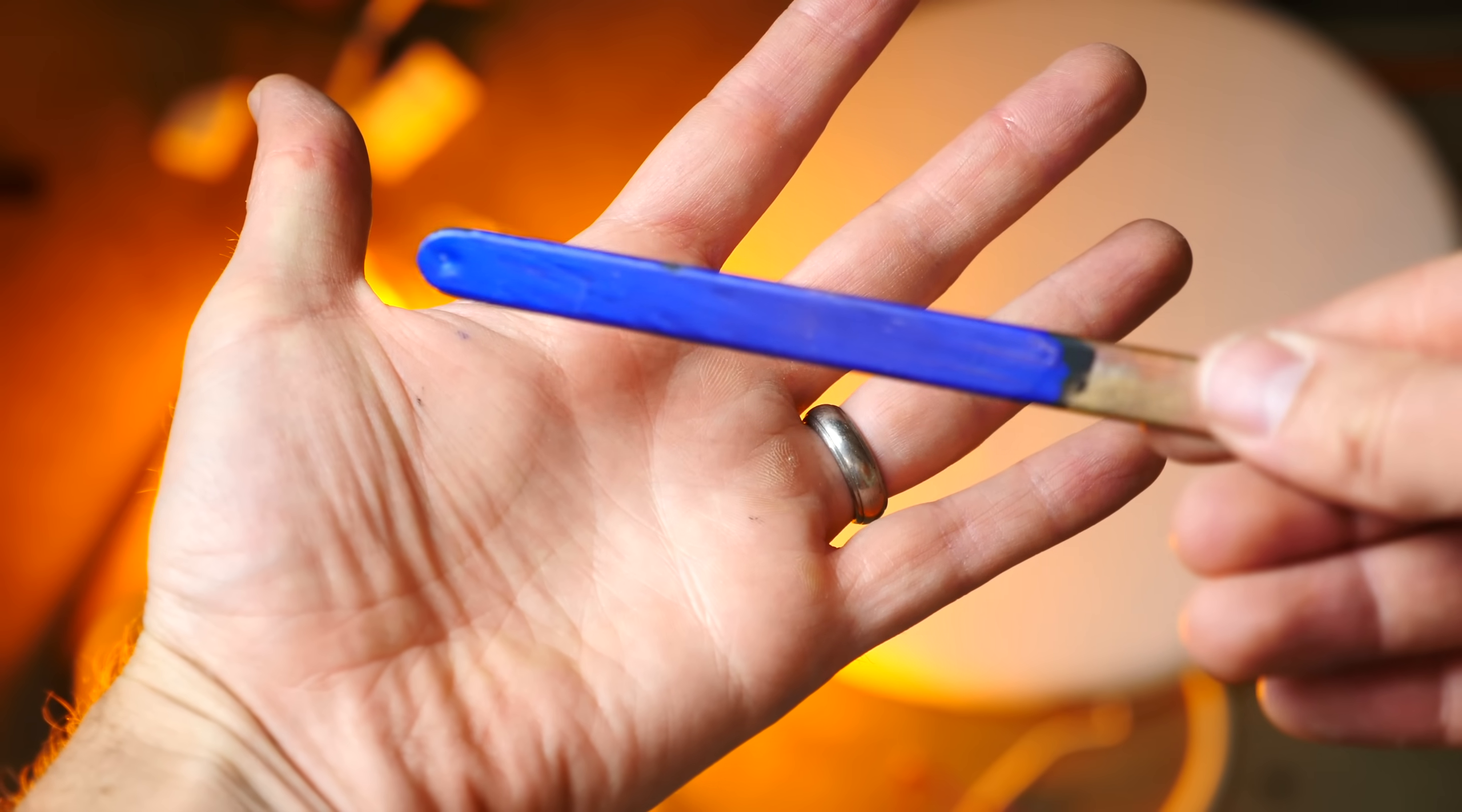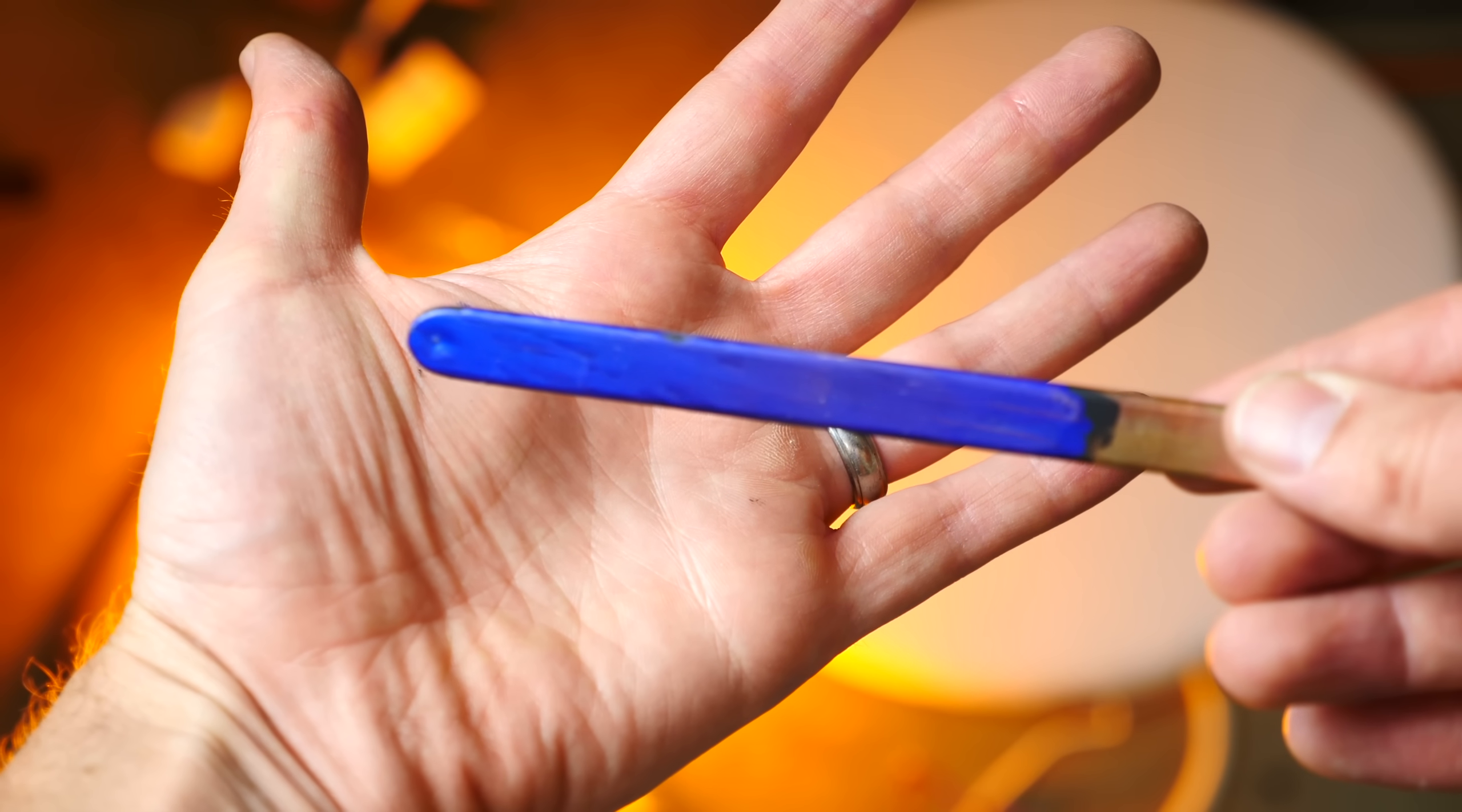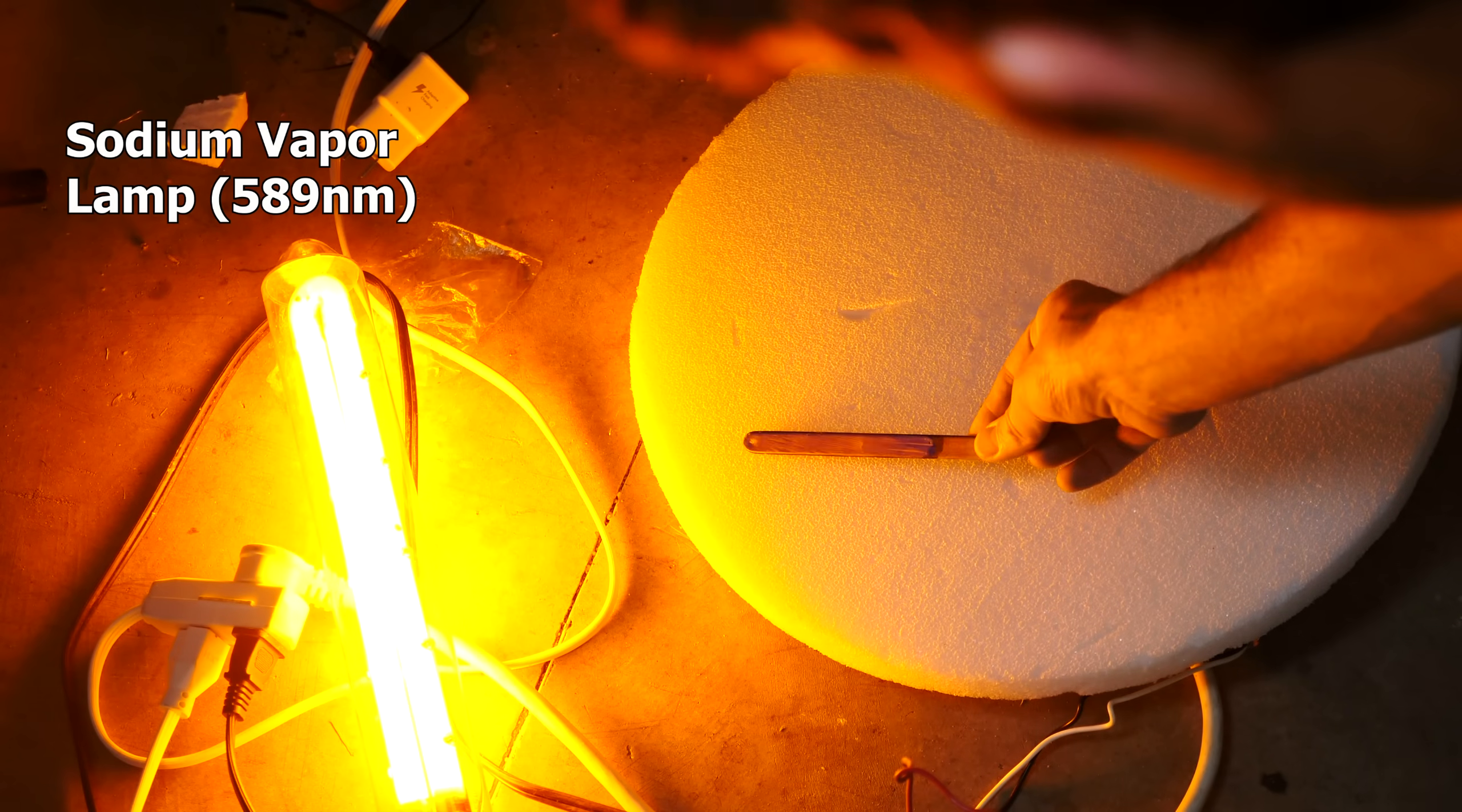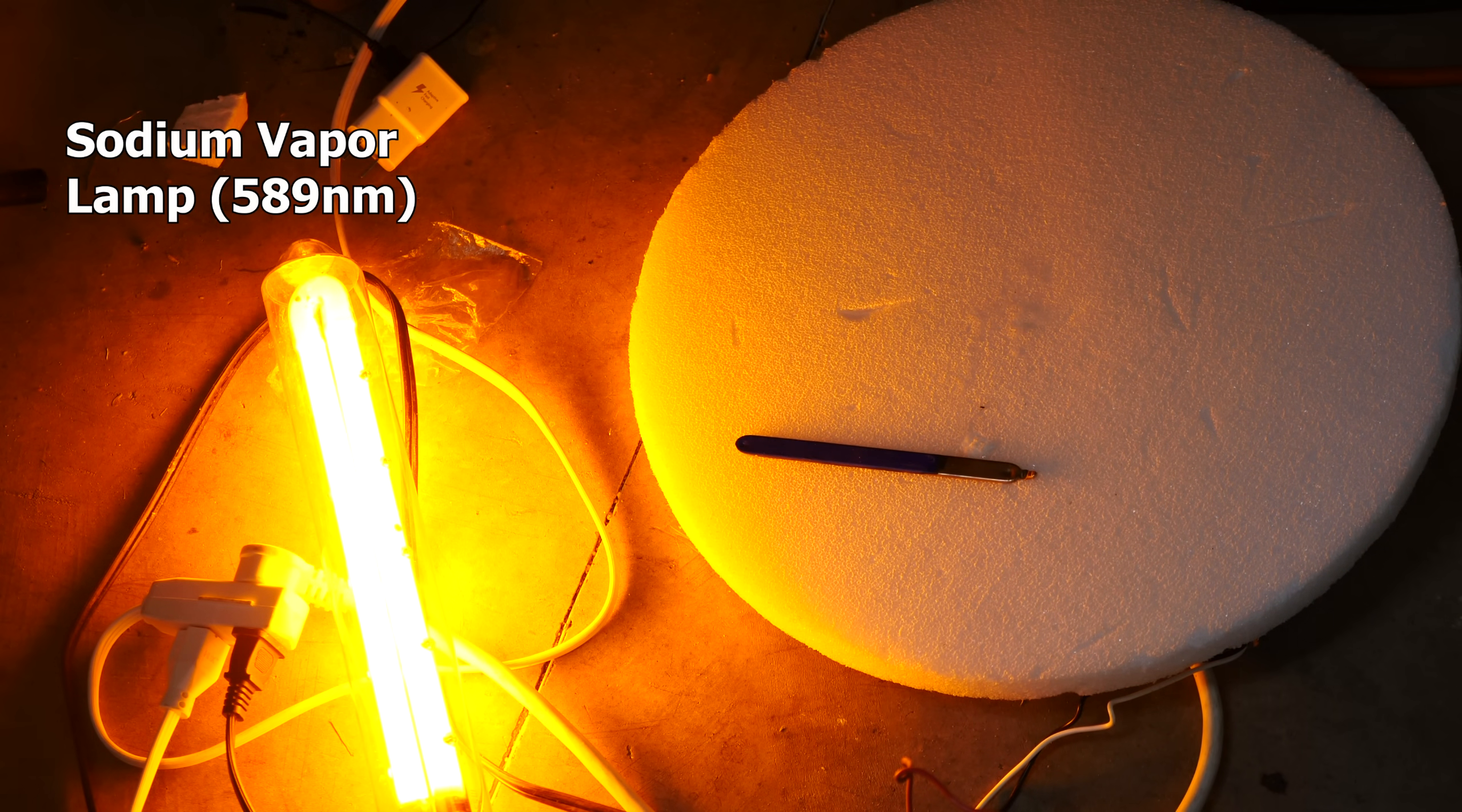For example, here's what this looks like in white light. You can see it's kind of purplish blue. Then when I put it on this monochromatic light source, it just looks black.